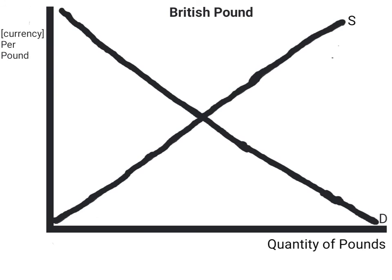The exchange rate itself is determined by the supply and demand for a currency, much in the same way these two factors determine the price of goods, such as better cars. Along the x-axis we have the quantity of the currency — in this case pounds — while along the y-axis you have the amount of whatever currency you are comparing it to per pound. The exchange rate is dependent on where supply and demand intersect. Thus, anything that would affect the supply or the demand of the currency would alter the exchange rate.